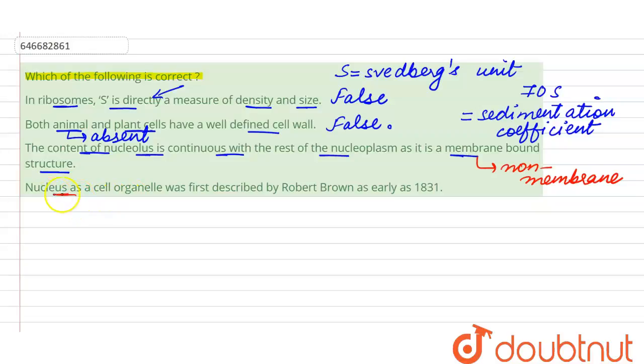The fourth statement says the nucleus as a cell organelle was first described by Robert Brown in the year 1831. This statement is true. The scientist Robert Brown and the year are both correctly given here, so we can mark option number 4 as the right answer for this question.